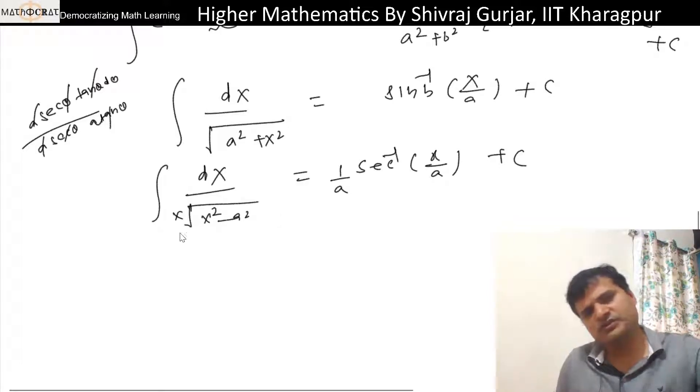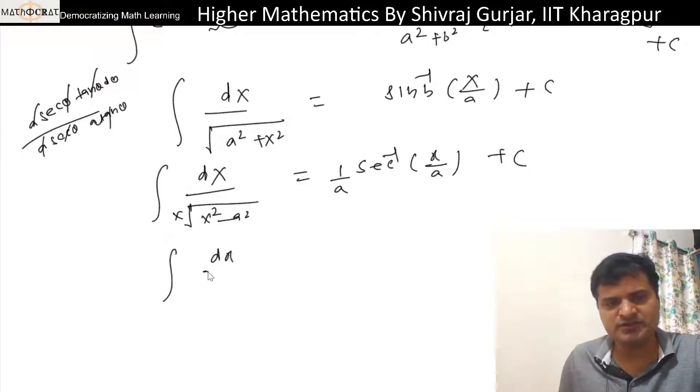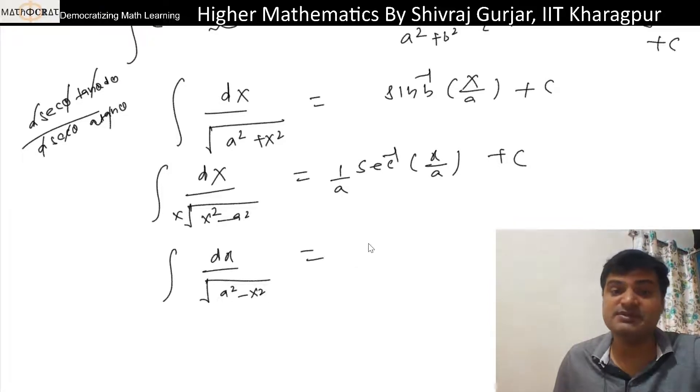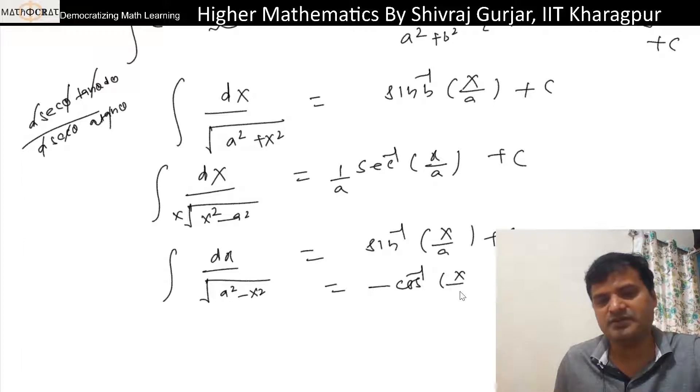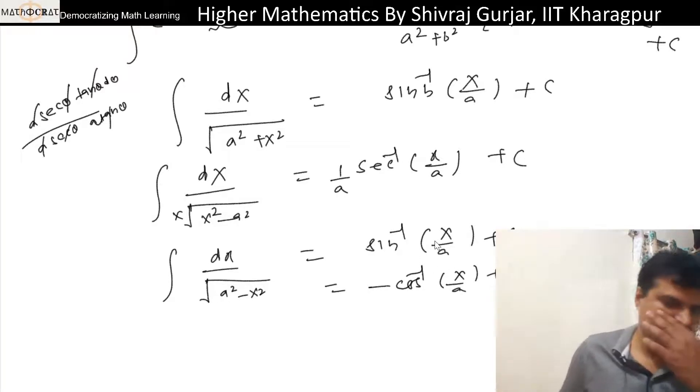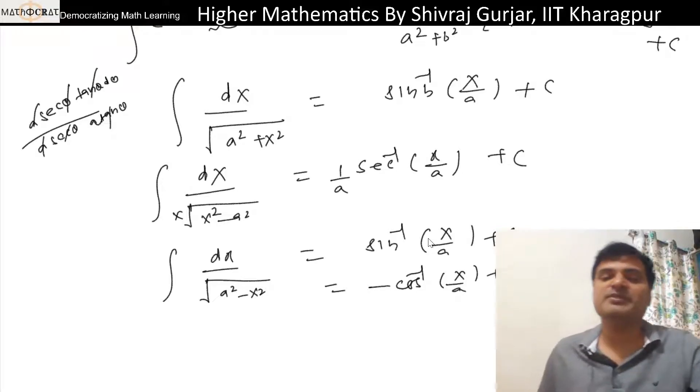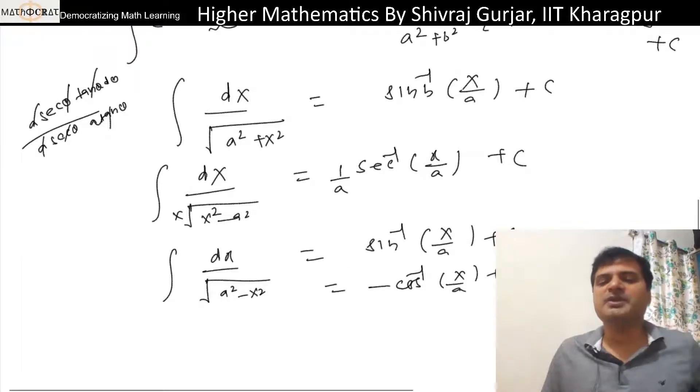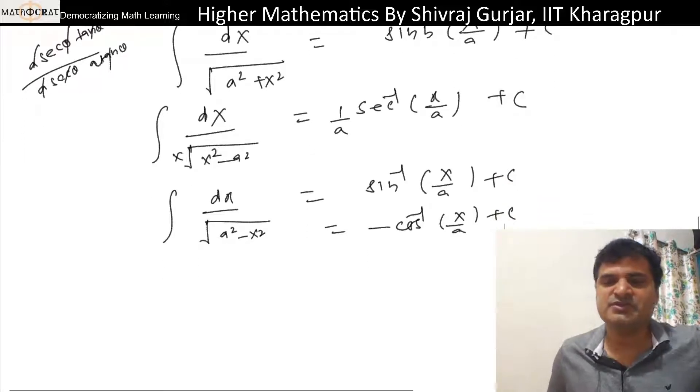Integral of dx divided by root a square minus x square, this will be sine inverse x by a plus C. We can also write this as minus cosine inverse x by a plus C, because sine inverse of an argument plus cosine inverse of the same argument is pi by 2. That pi by 2 will shift into the constant of integration.